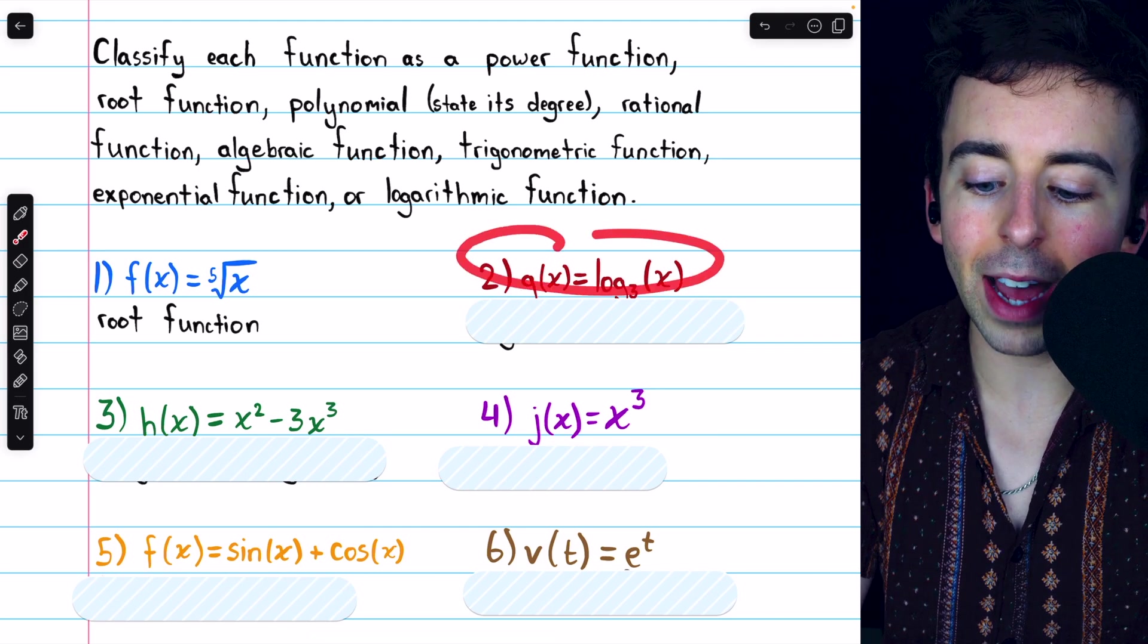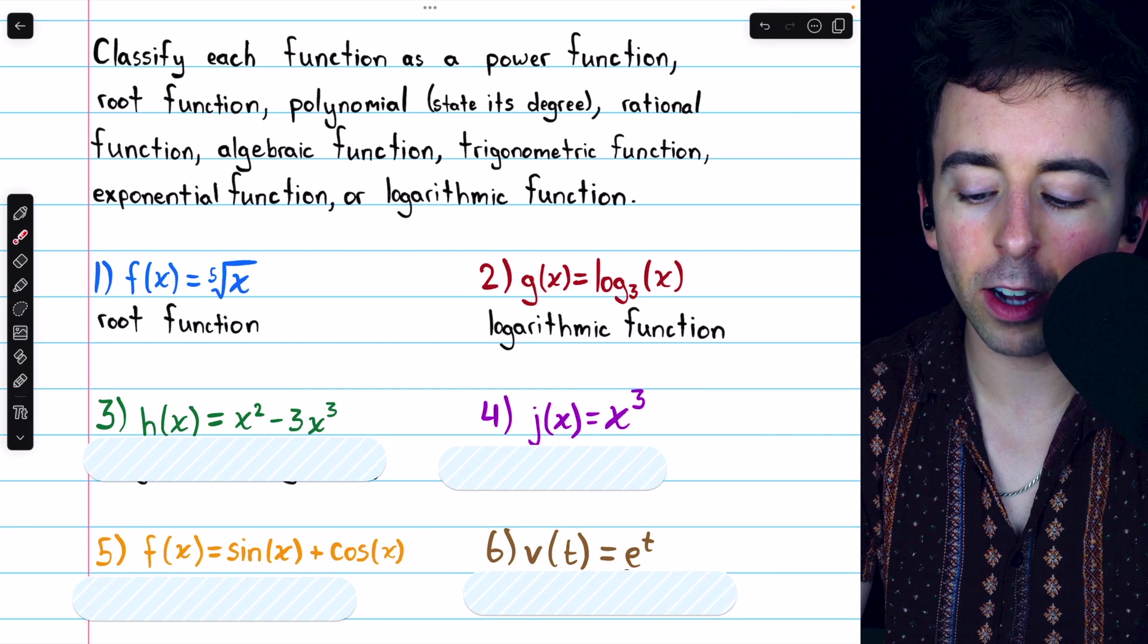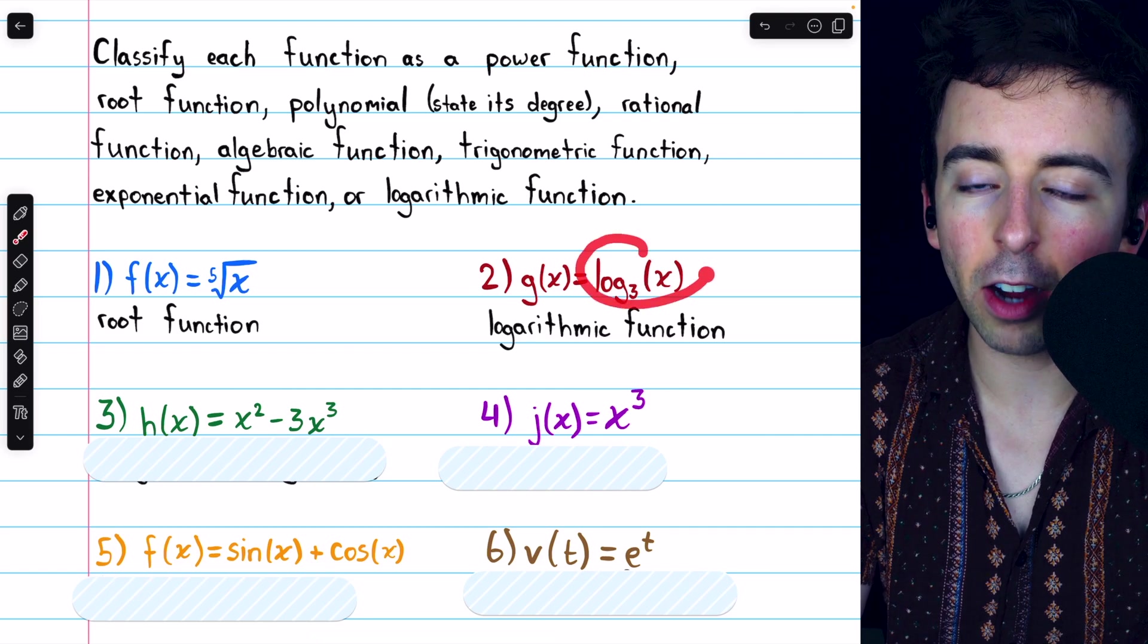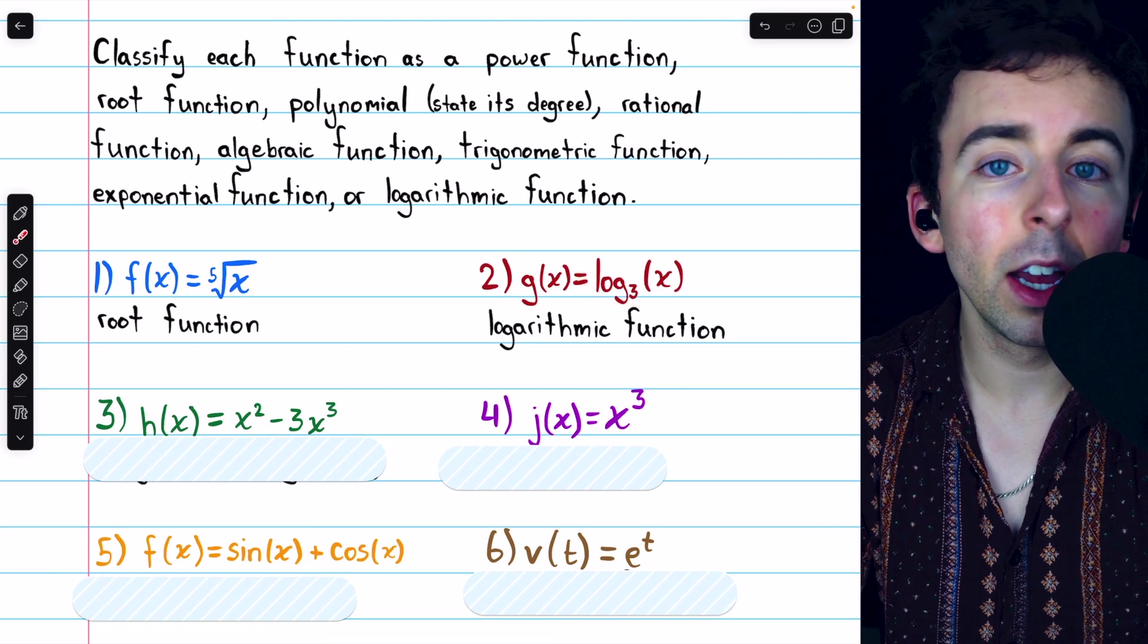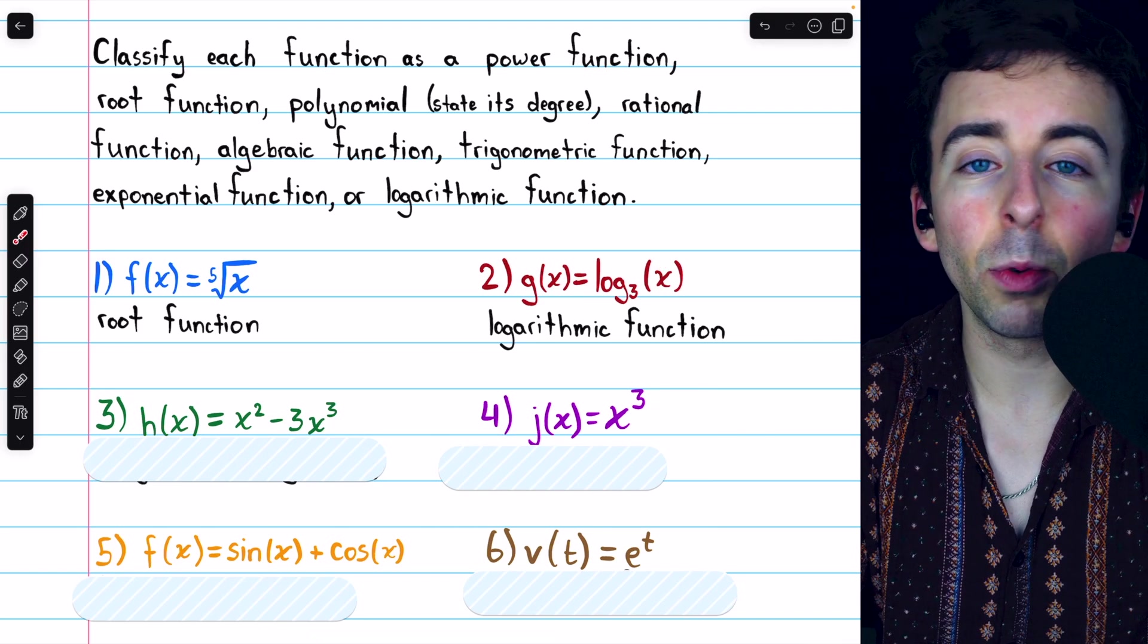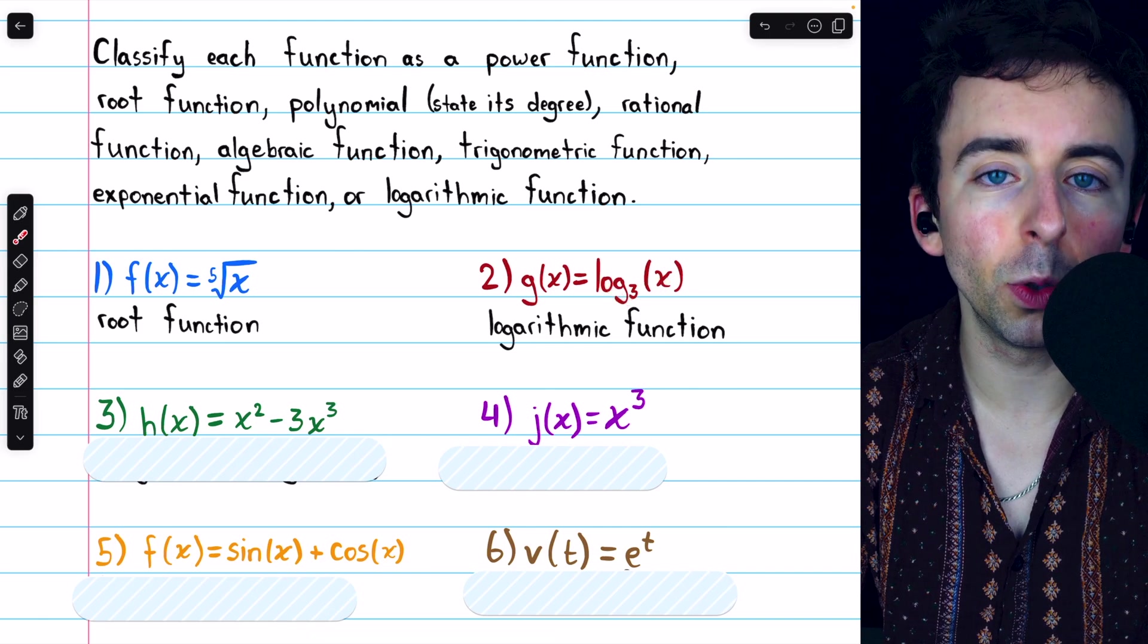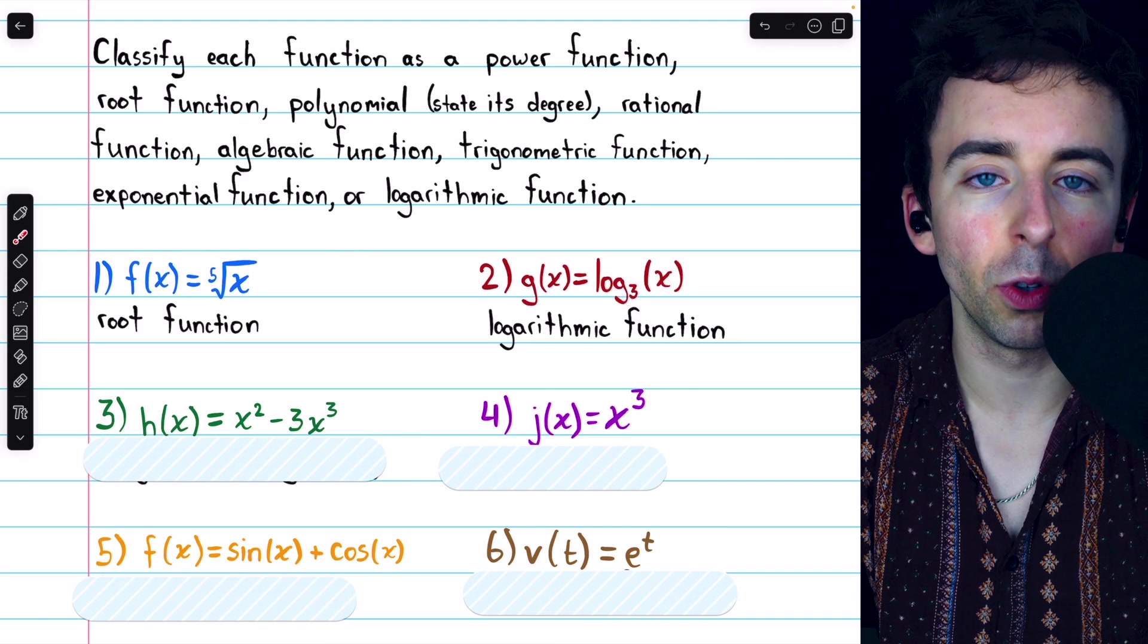Number two, g of x equals log base three of x. This is, of course, a logarithm function. It's the logarithm with base three. For example, if we plugged nine into this function, that would give us two. Log base three of nine is two because three to the power of two is nine.